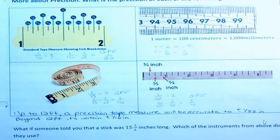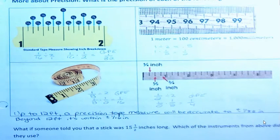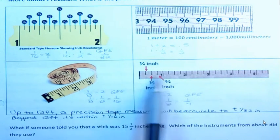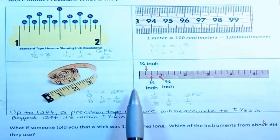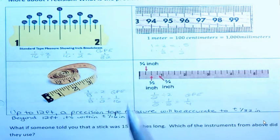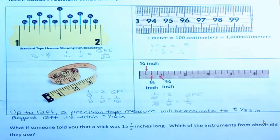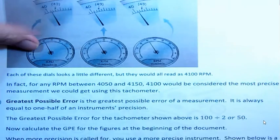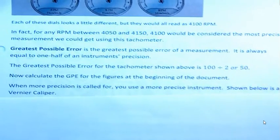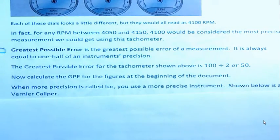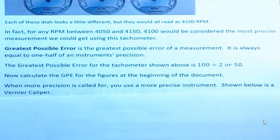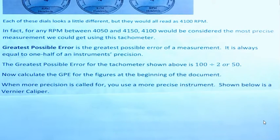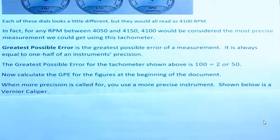We could say 0.5 or 1 half. So the precision has to do with how precise are the markings on your measure or your tool and then the greatest possible error is whatever that is divided by 2 and it just is times 1 half if you're working with fractions. When more precision is called for you use a more precise instrument. That's why I was talking about tape measures that are more precise. Maybe you need a tape measure that shows up to the 64th inches and of course now you have the luxury of using instruments that are digital.